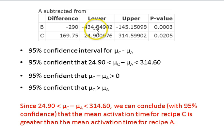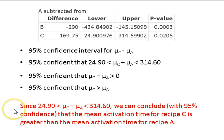Here are two of the options. Notice that if both limits are negative, I can reach a decision about which one's bigger. If the upper and lower limits are both positive, I can also reach a decision. What you'd say is: since 24.9 is less than the mean of C minus the mean of A, which is less than 314.6, we can conclude with 95% confidence that the mean activation time for recipe C is greater than the mean activation time for recipe A. In this case, what's significant is that both limits of the confidence interval are positive.